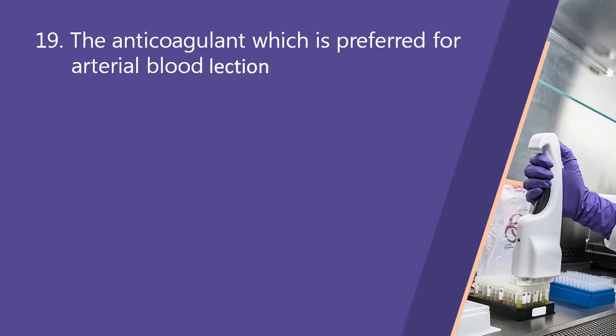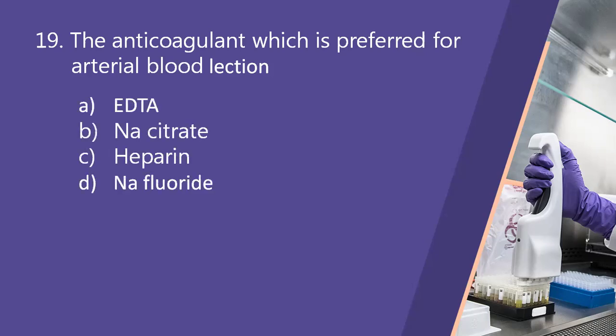Next question: the anticoagulant preferred for arterial blood collection. Option A, EDTA. Option B, sodium citrate. Option C, heparin. Option D, sodium fluoride. The right answer is option C, heparin. Heparin is the natural anticoagulant — it prevents clotting by inactivating thrombin, thereby preventing the conversion of fibrinogen to fibrin.